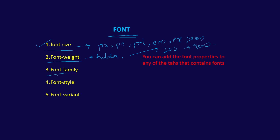Next you have font family. You have multiple various font families which you can use. By default, there are some font families already present in CSS, and there are other font families which you can use from Google Fonts. Next you have font style, which can be bold or italic. Then font variant — this font variant property is going to specify whether or not the text should be displayed in the small caps font.